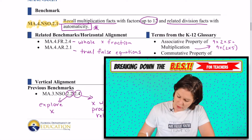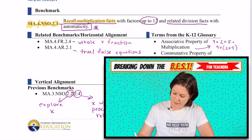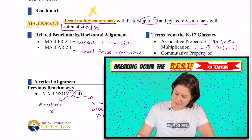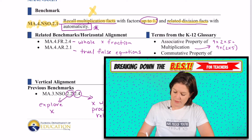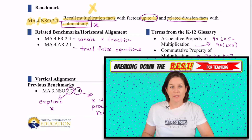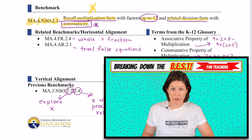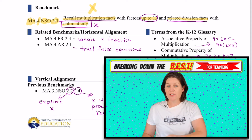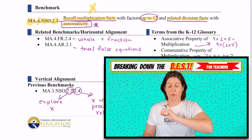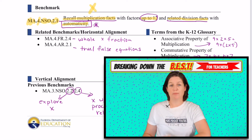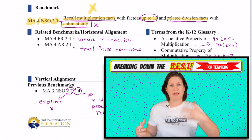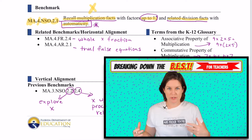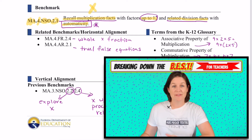This standard says to recall multiplication facts with factors of up to 12 and the related division facts with automaticity. Automaticity means that it doesn't take much effort for students to get to the product, because we're going to be using this standard to help with more challenging problems where we're multiplying two-digit times three-digit numbers. But not in this standard.